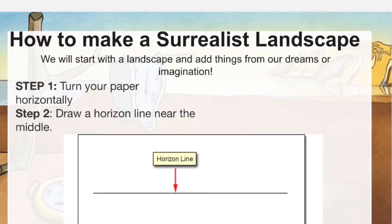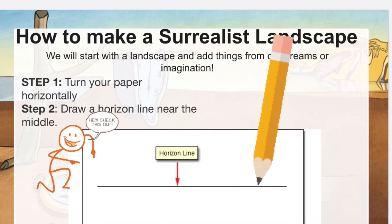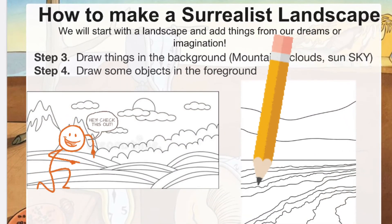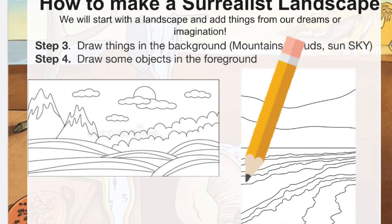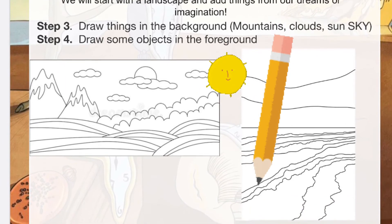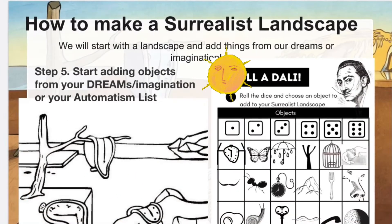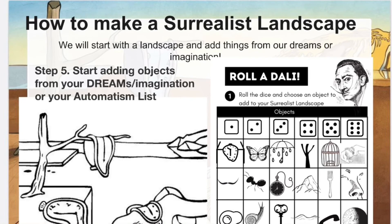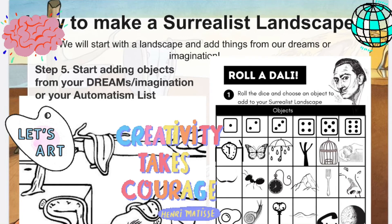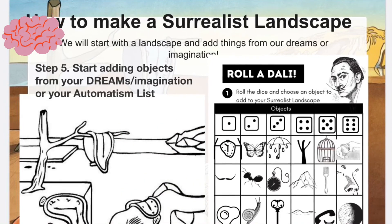Most landscapes will start with a simple horizon line. Take your pencil and draw lightly a horizon line near the middle or anywhere on your paper. The second step is to add some things in the background and foreground — you can add mountains, clouds, sun, anything you want. After you've drawn the realistic parts of your landscape, then it's time to get creative. You can start adding some objects and symbols from your imagination that you used in your list, or you can use some of the ones that Dali used.